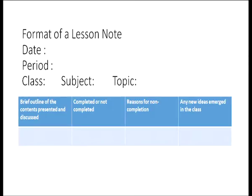The lesson note also includes main questions facilitating teaching and assessment, and tentative time required for each major activity. Its columns include a brief outline of the contents presented and discussed, whether completed or not, reasons for non-completion, and any new ideas that emerged in the class. Many times there are spontaneous but fruitful discussions in class resulting in meaningful insights, which a teacher can note down. It can also act as a reflective note on why a lesson was not completed.